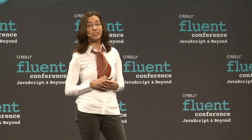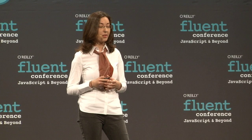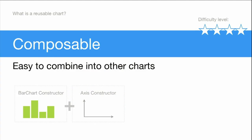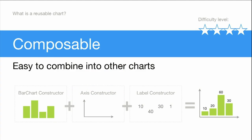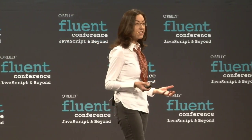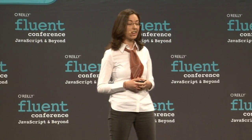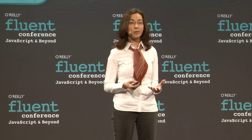Last but not least, coming in with four stars of difficulty: if you break down a chart, you'll actually see that there are a lot of common components made up across different types of charts. For example, if I have a bar chart and I take an axis and then take some labels and put them together, I get a bar chart that has some numbers on it. A lot of data visualization can be broken up in this way, and if you've written a lot of data visualization, you'll find yourself rewriting the same things over and over. We've been thinking about this for probably close to a year now, thinking about those principles and putting them together.